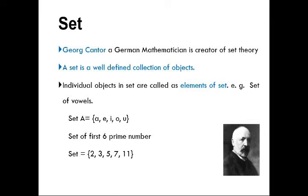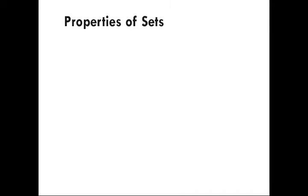For example, take 2 — it is divisible only by itself and by one. Similarly, 3 can be divided by 3 and by 1, and no other number can divide 3. So the set of first six prime numbers is {2, 3, 5, 7, 11...}.